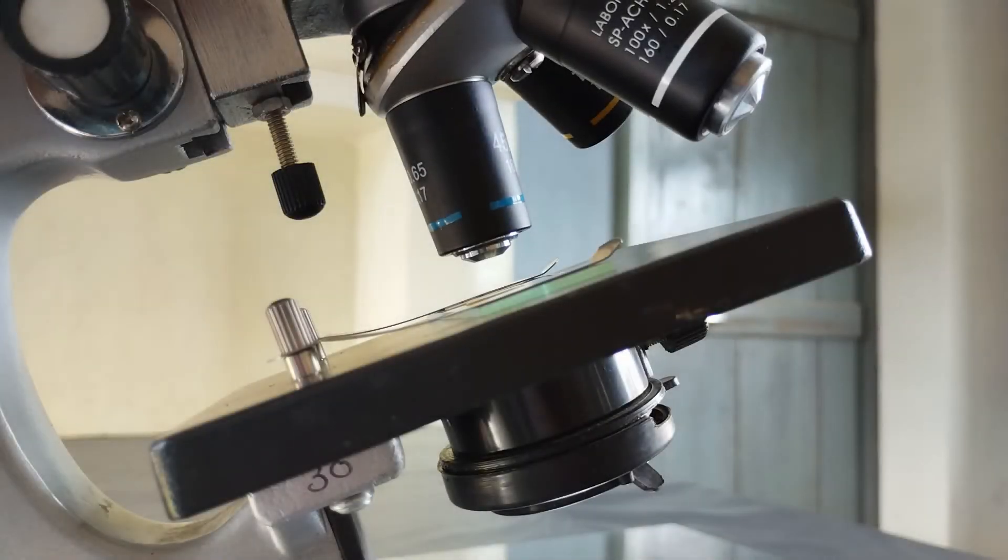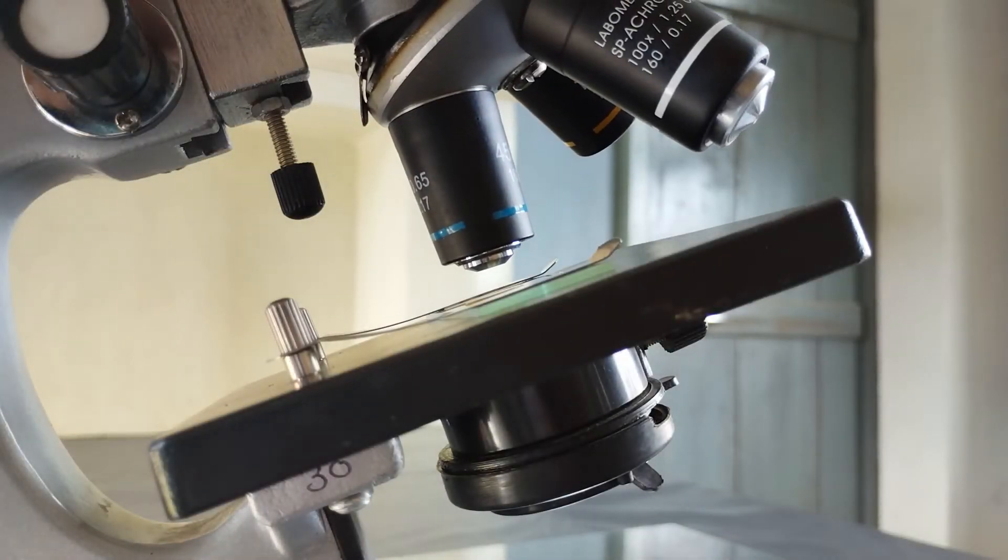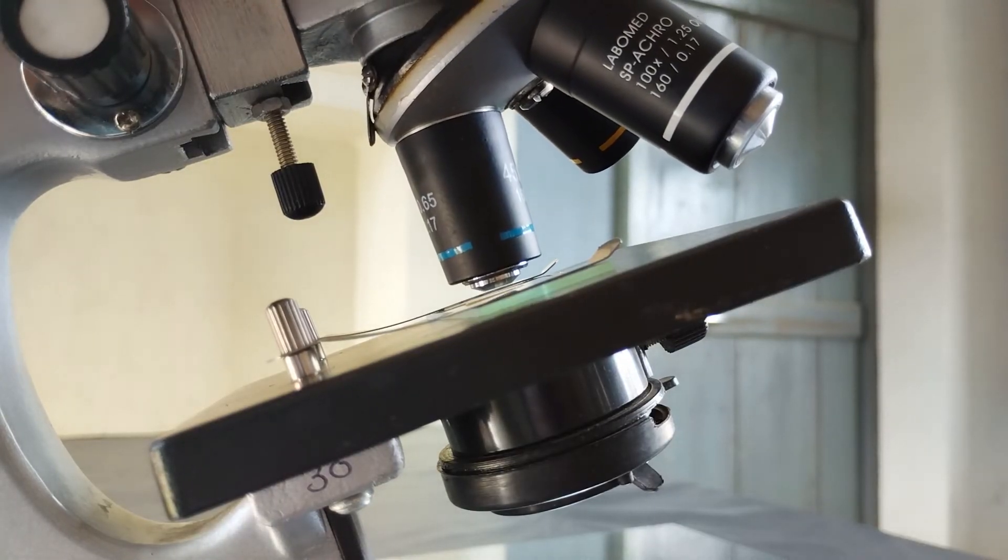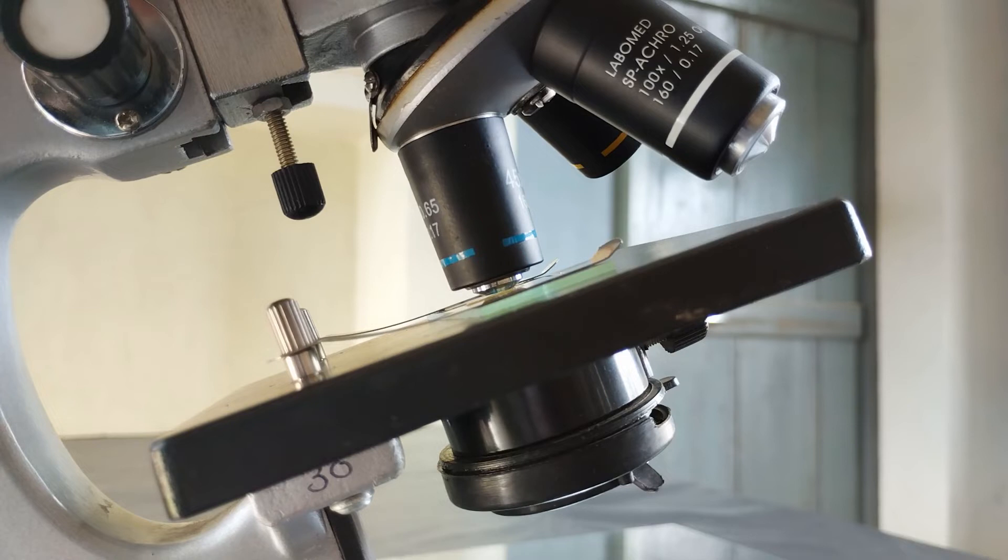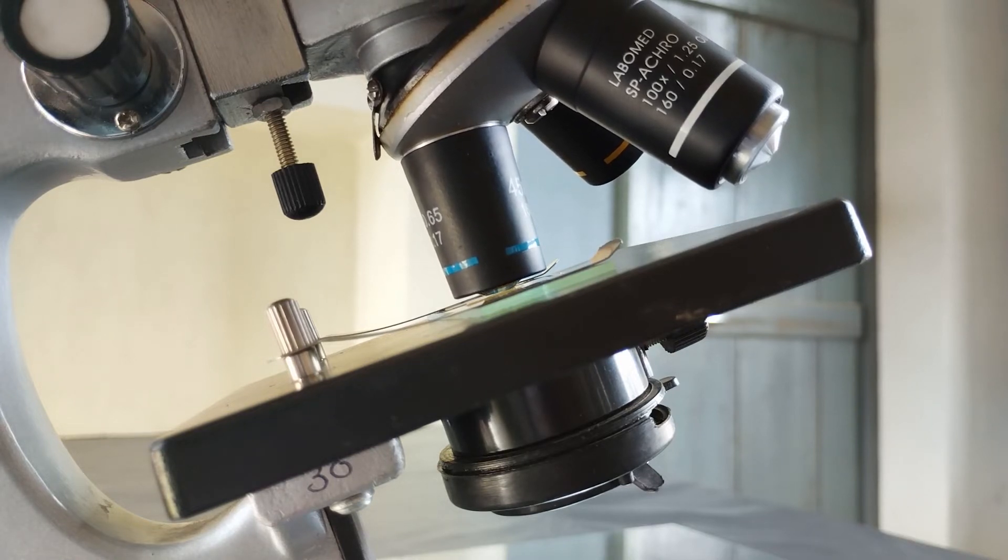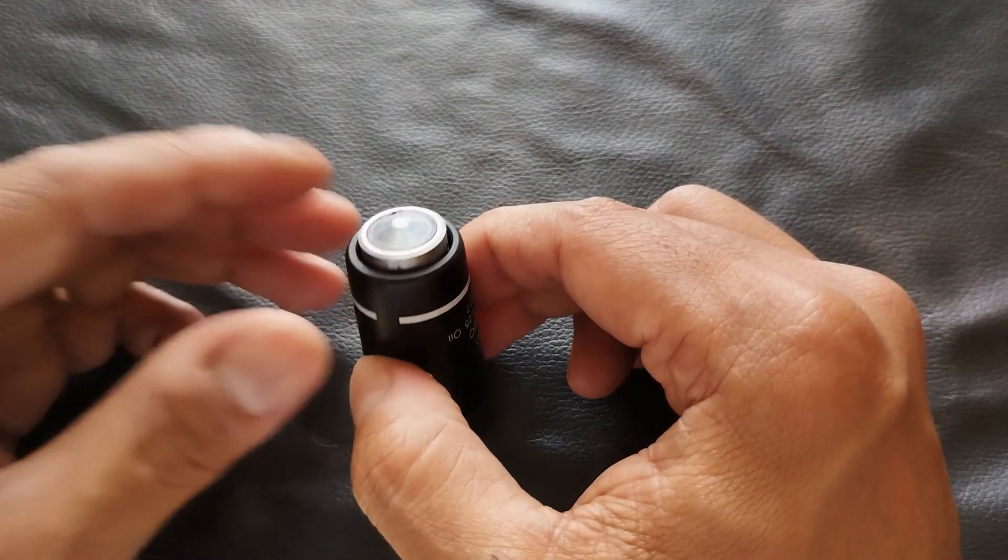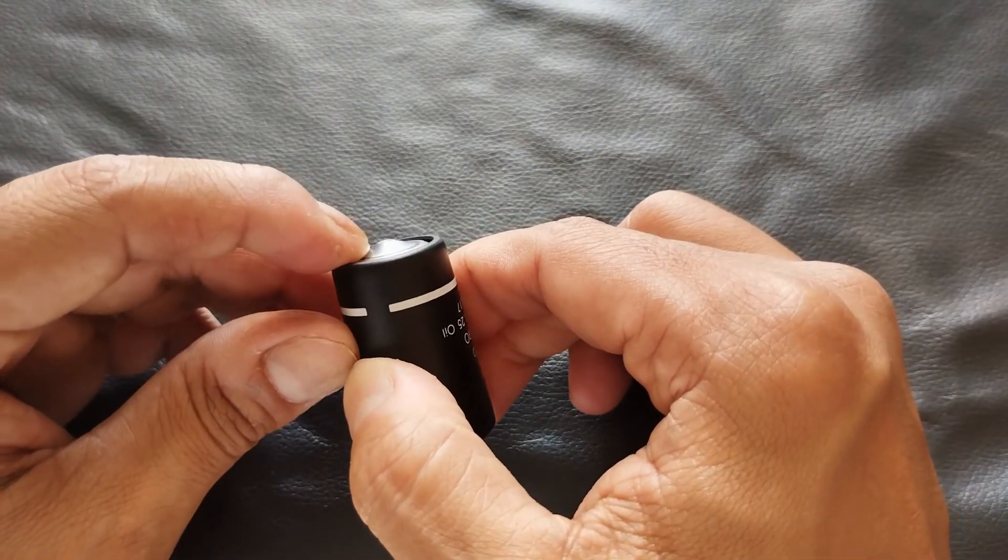To prevent this mishap, many modern high power objectives are manufactured with a spring mechanism fitted for the front lens. These spring-loaded objective lenses help prevent accidental breakage by retracting the front lens to a certain degree into the body of the objective when the user happens to overshoot the lens against the glass slide.